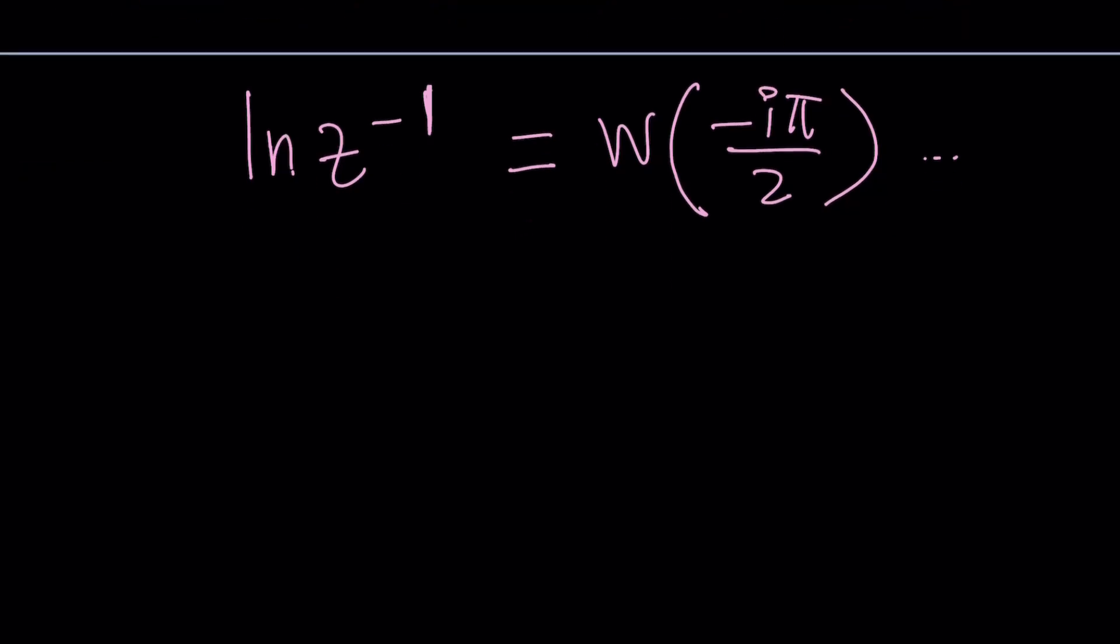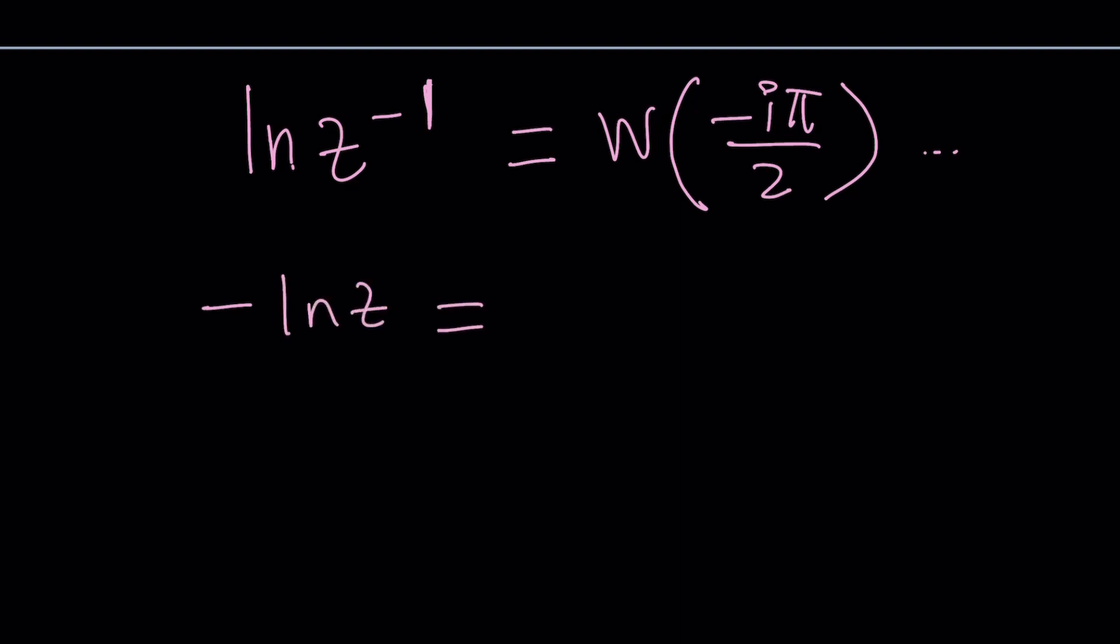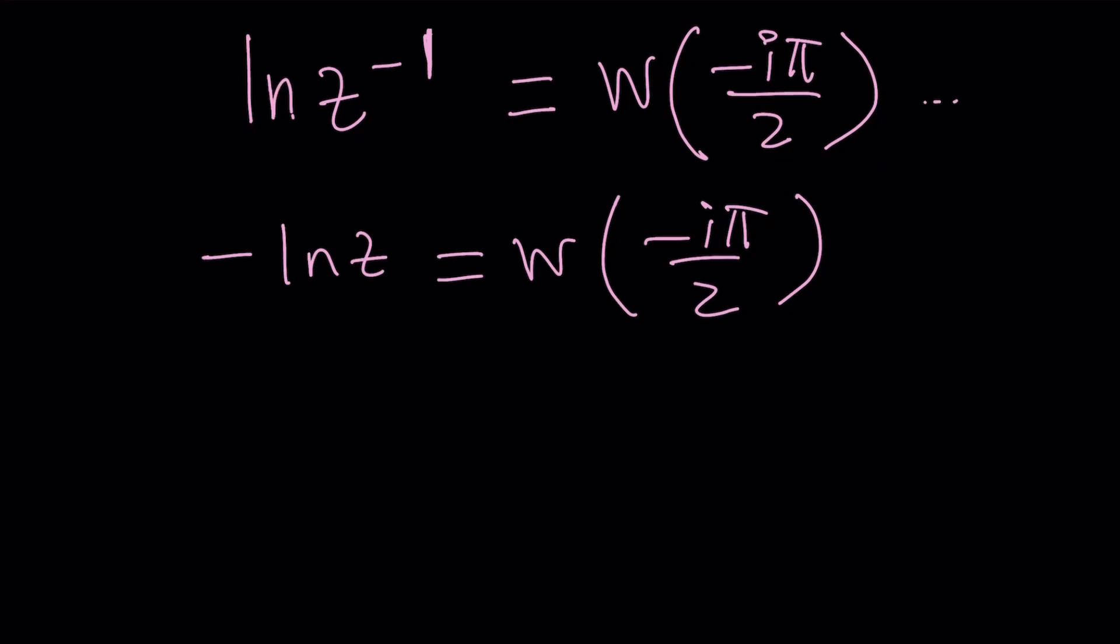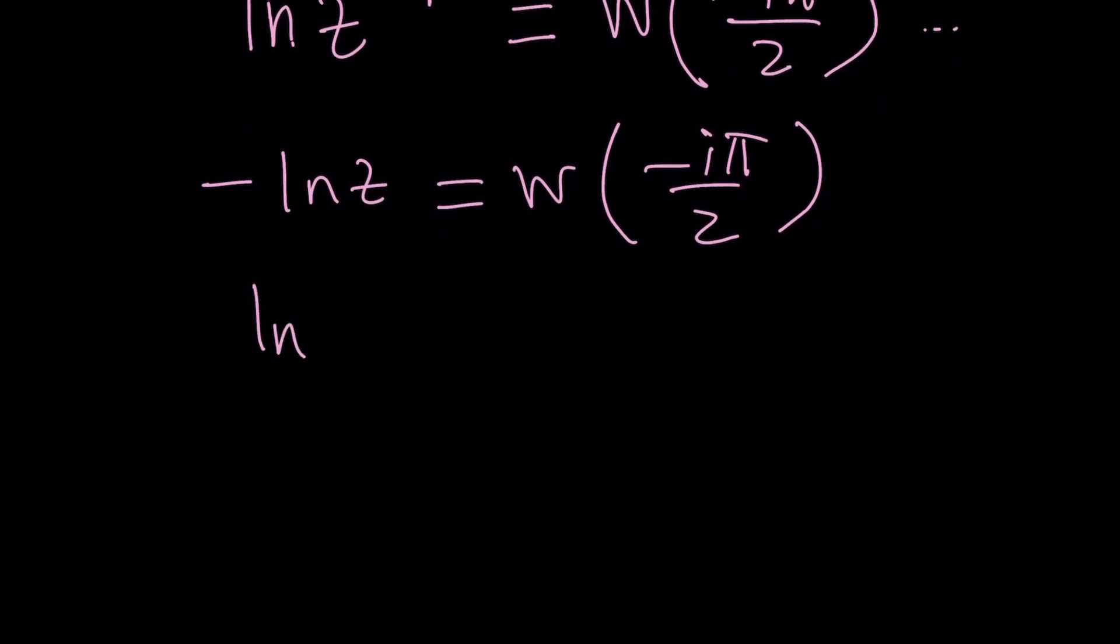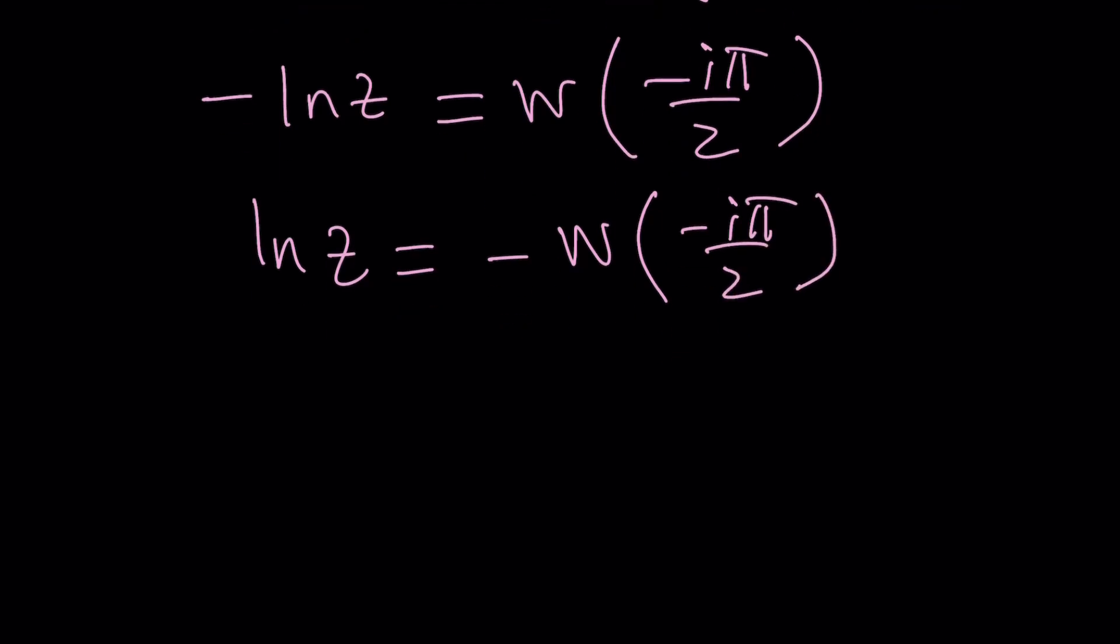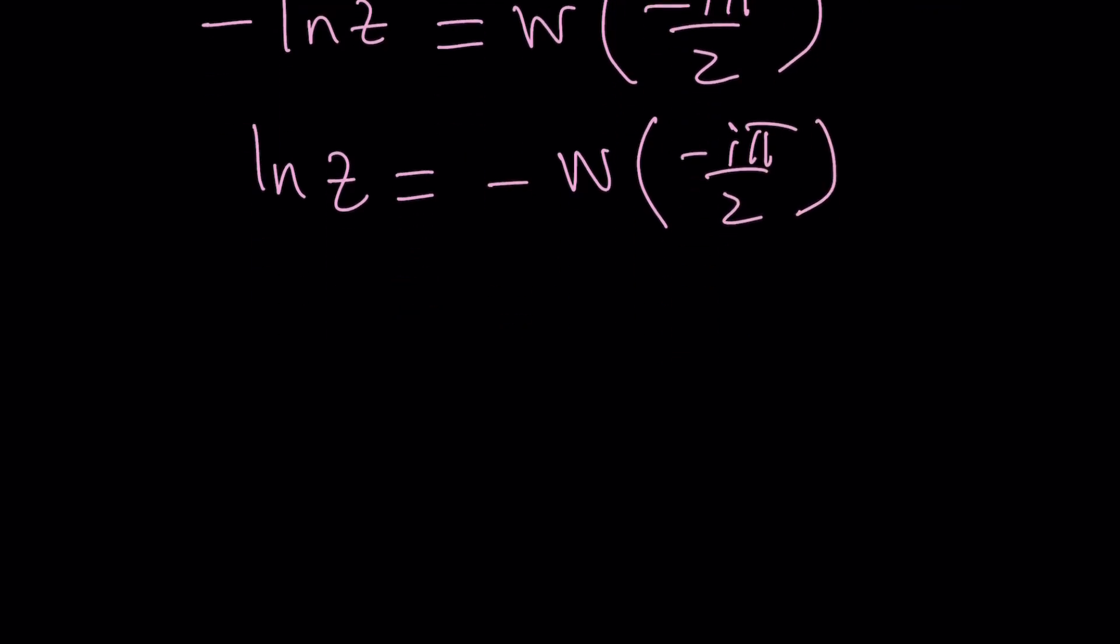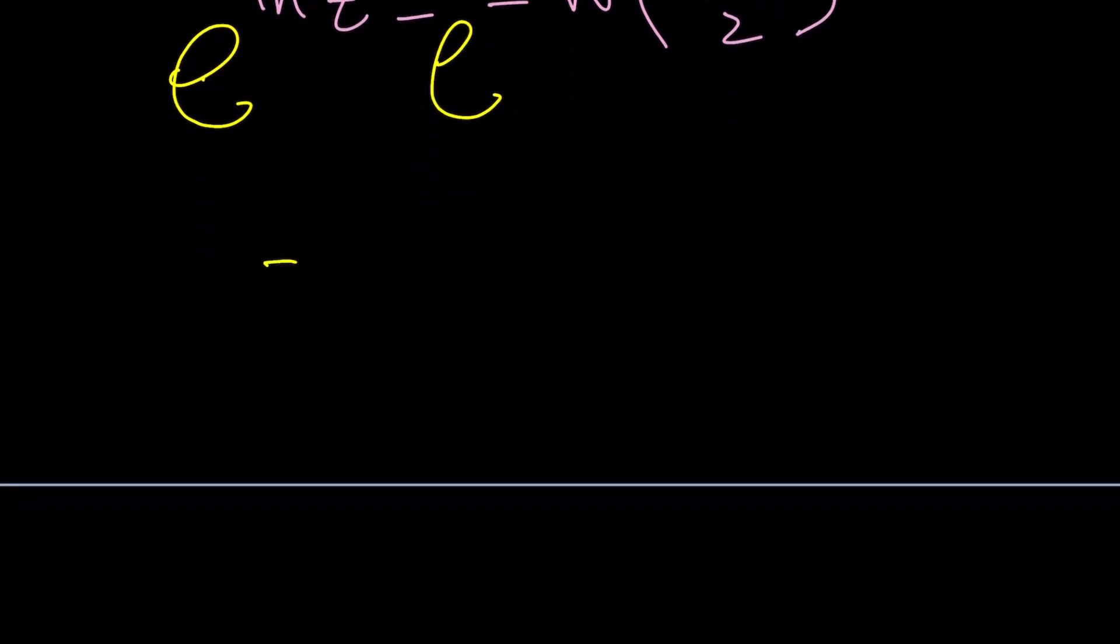Bring the negative 1 down, properties of logs, and now here's what I want to do. I want to solve for z. How do you solve for z? First let's get rid of the negative sign. That's going to put a minus sign on the right hand side. And now we want to do e to the power both sides. If you do e to the power both sides then e to the ln z is just z. So from here z is going to be e to the power negative W of negative i pi over 2.